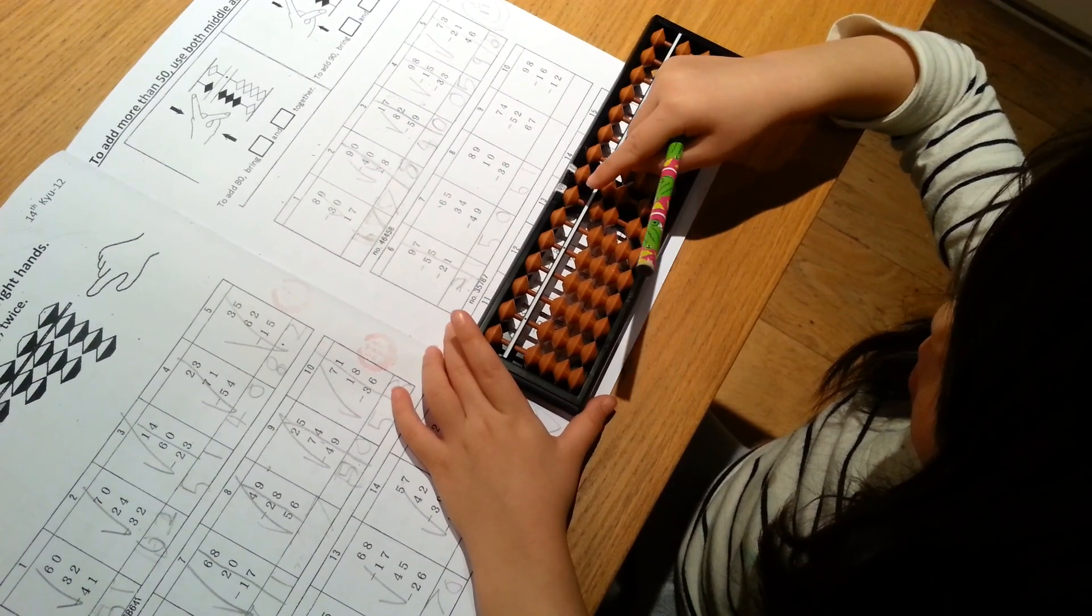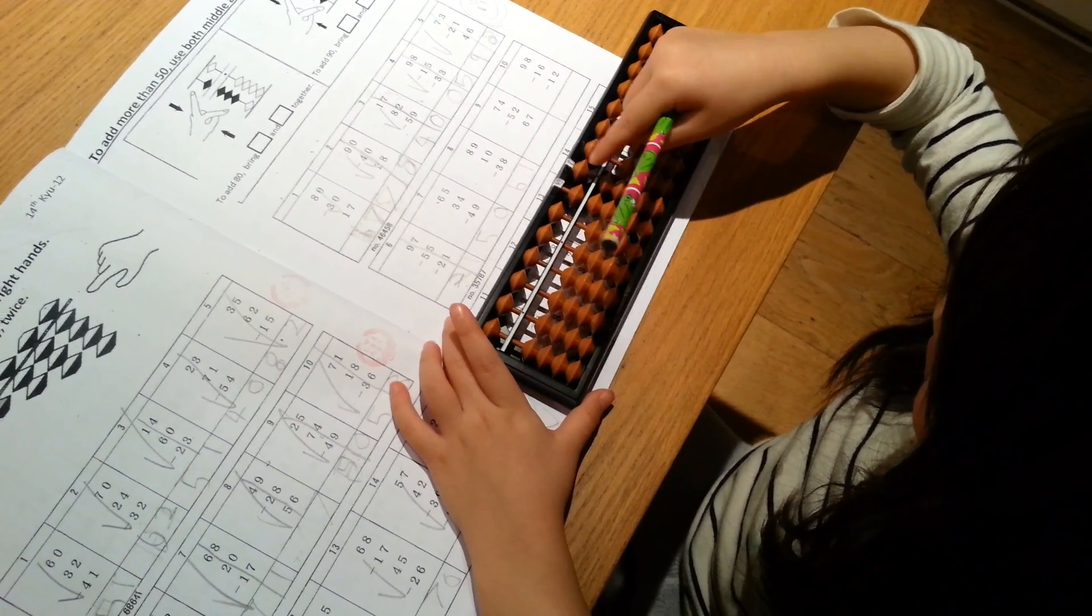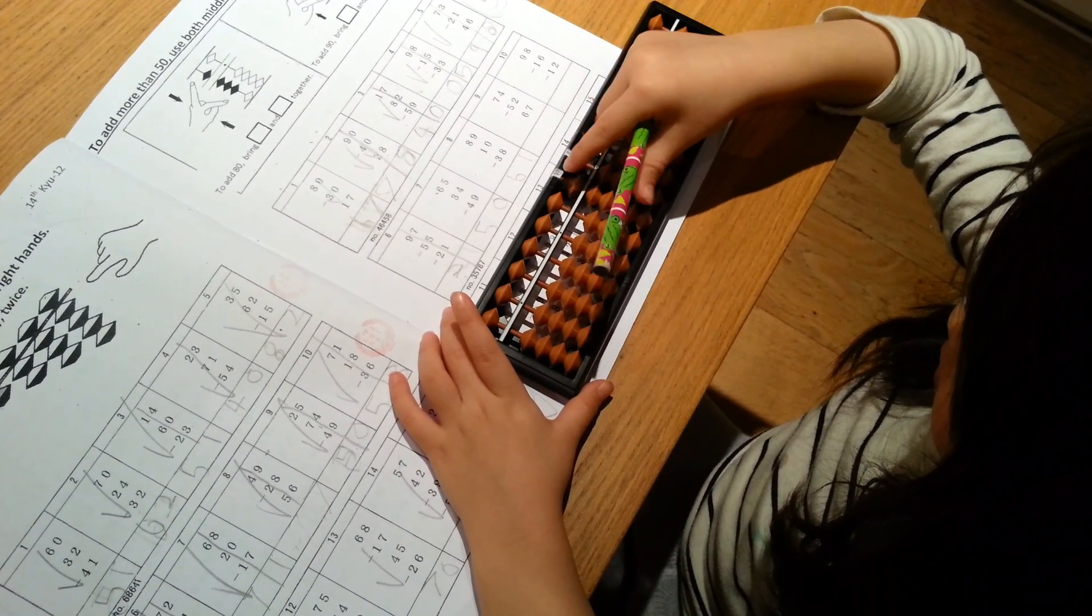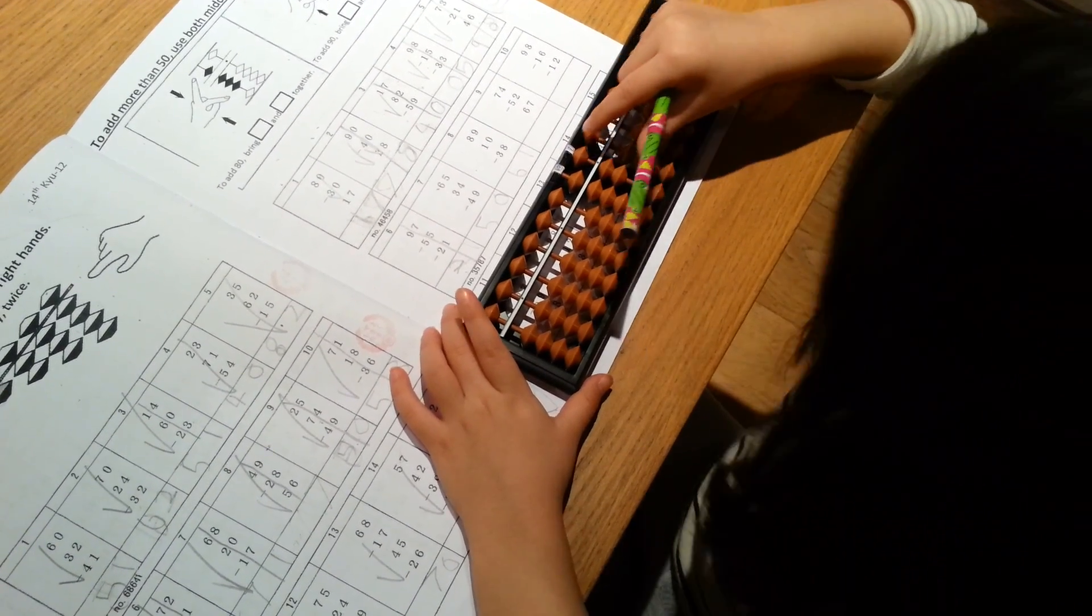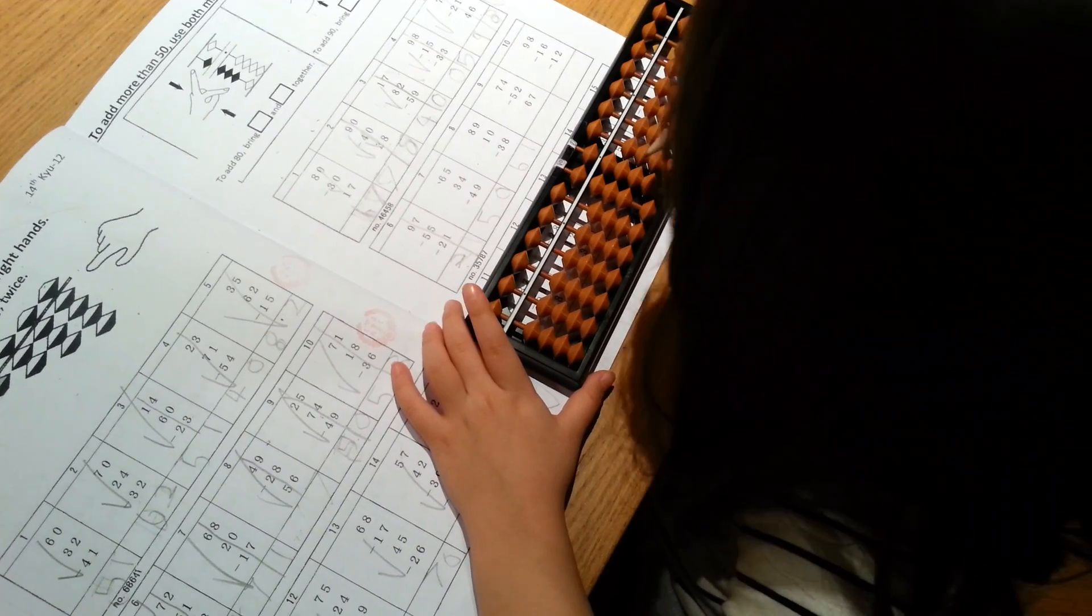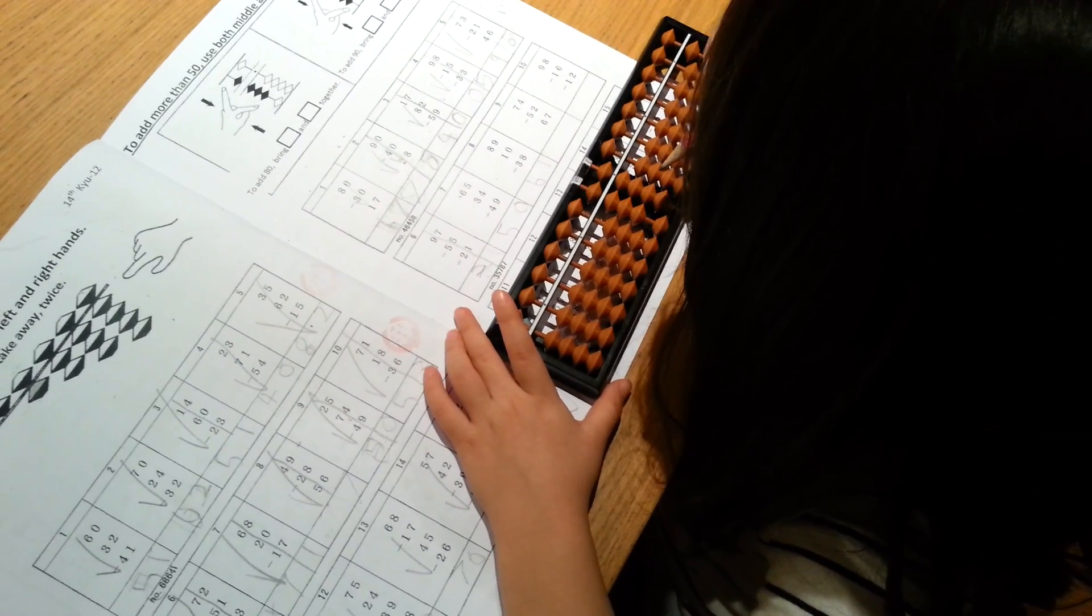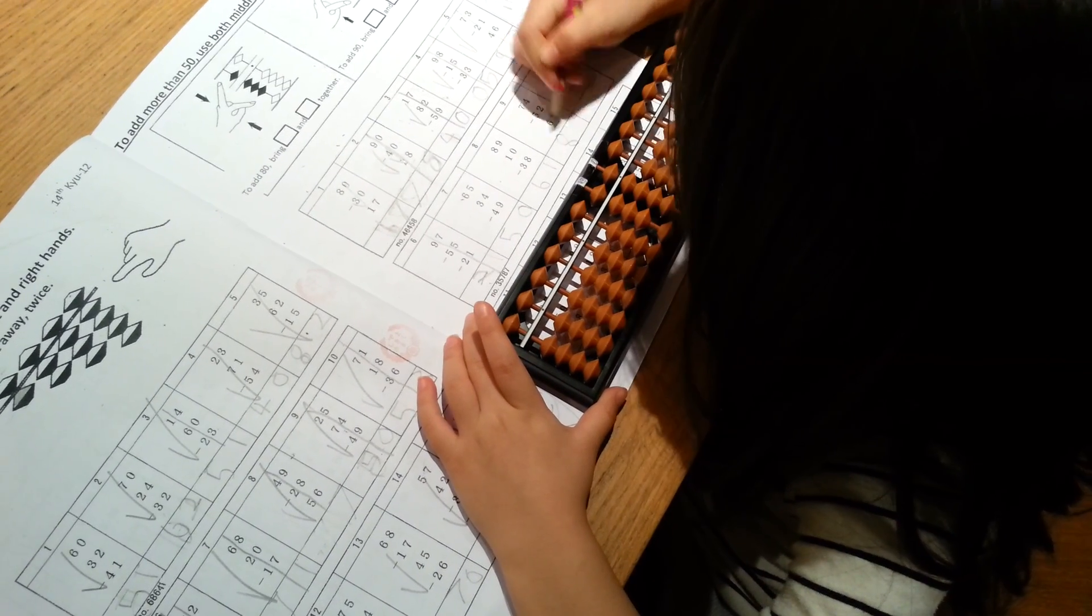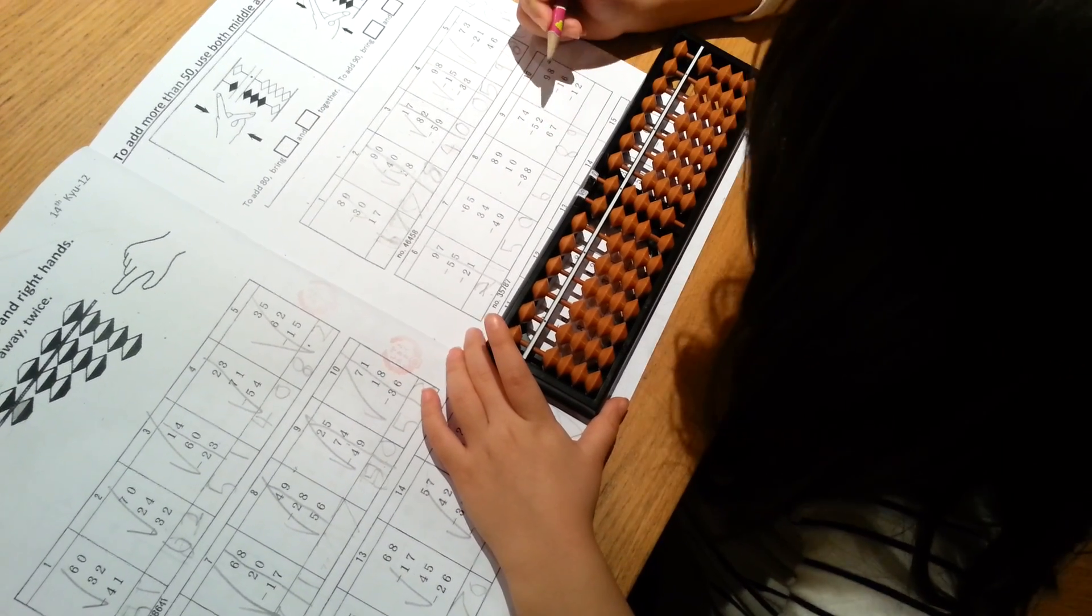Add 67. 60, yeah, I know. 60. 5 and 1, 6, yeah. 67, that's it. Very good.